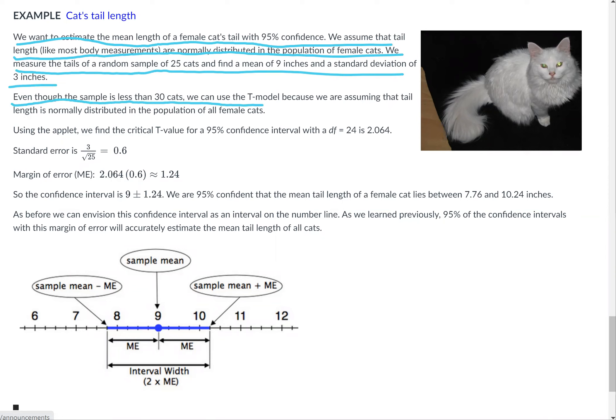Even though the sample is less than 30 cats, we can use the t-model because we are assuming that tail length is normally distributed in the population of all female cats. The sample size is not large enough to use a normal model based on sample size alone, but body measurements of humans or animals are normally distributed, so we can use a normal distribution.